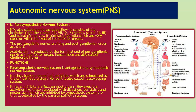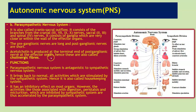The parasympathetic nervous system is also called craniosacral outflow. It consists of branches from the cranial nerves — the third, seventh, ninth, and tenth nerves — as well as sacral second and third and spinal fourth nerves. It consists of ganglia which are very close to or within the wall of the effector organs. The preganglionic nerves are long and postganglionic nerves are short. Acetylcholine is produced at the terminal ends of postganglionic nerves at the effector organ, so these are also called cholinergic fibers.